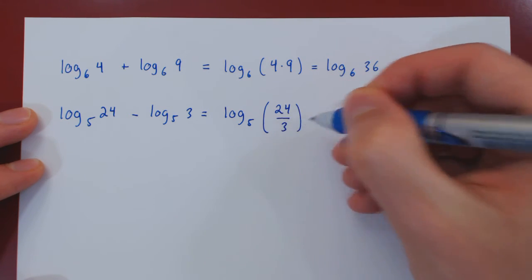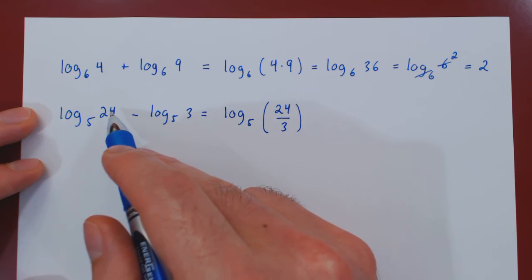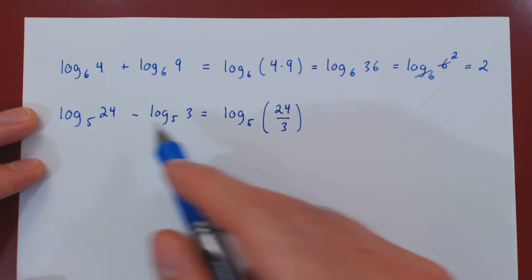And again, if you're not sure, go backwards. The log of a over b is the log of a minus the log of b. So this checks out.